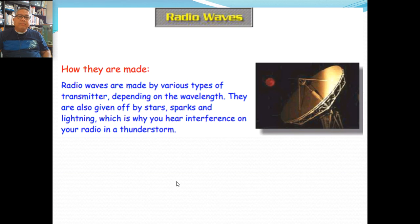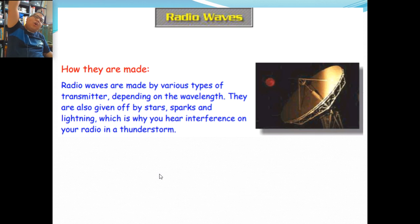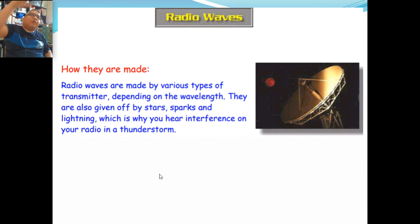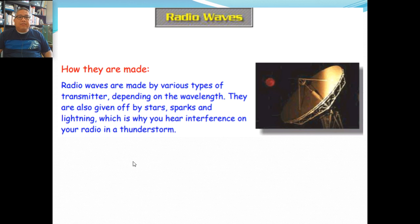Radio waves are made by various types of transmitters. The beauty of radio waves is the wavelength is so long it can cover long distances. Unlike microwaves, which need a lot of cell sites or cell towers to transmit information, radio waves are so long they can travel longer distances. They are not as clear as microwaves, but they can travel longer distances. That's why there are areas where you can get radio signals but you will not have internet connection.